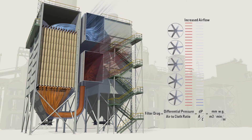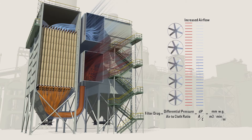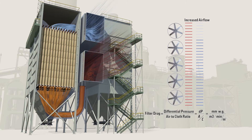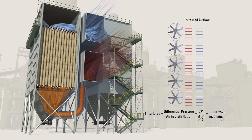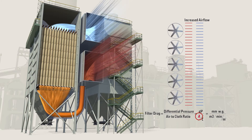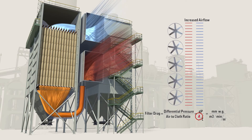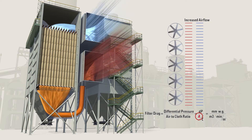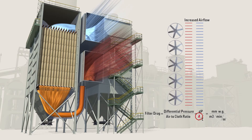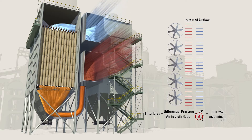If fan speed is fixed, by using Gore Low Drag filter bags, plants can operate at the same differential pressure and at a 10 to 15 percent higher airflow, allowing for more consistent boiler draft and potential increases in boiler energy output.